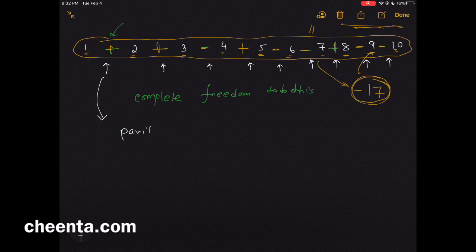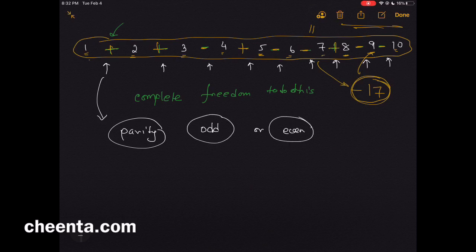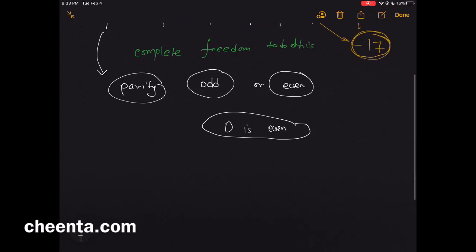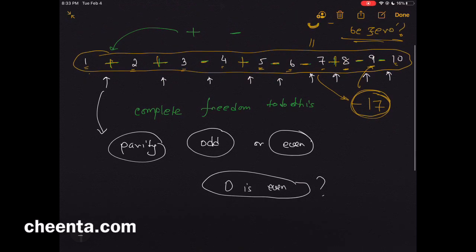Now there is a very beautiful way of doing this problem, and it uses the notion of parity. Parity can be defined in a broader sense, but for this particular video, let's understand it in a very simple manner. We think of it as odd or even. So any number is either odd or even, but it cannot be both.